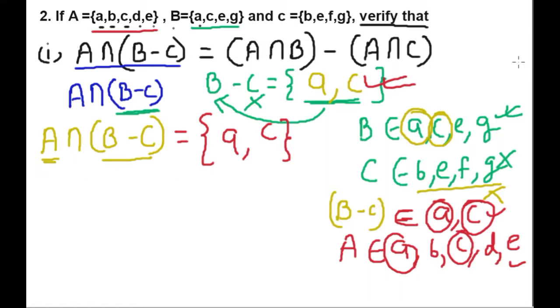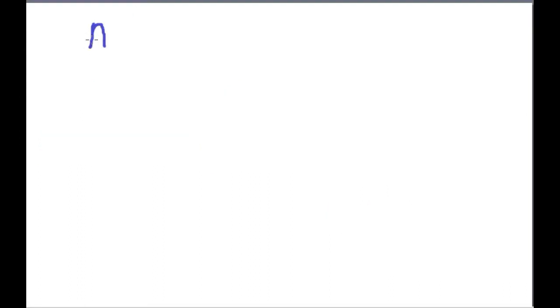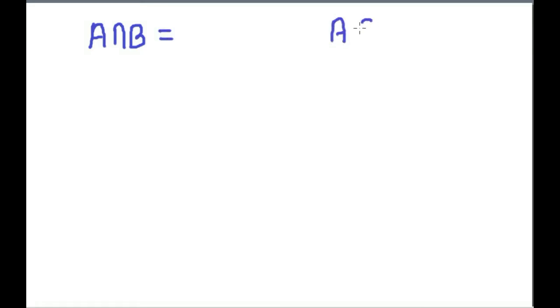So A intersection (B minus C) gives us the result. Now for the second part, we will compute (A intersection B) minus (A intersection C).